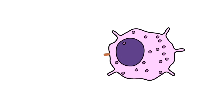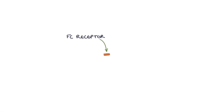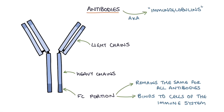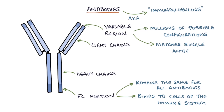The cells of the immune system have an FC receptor that binds to the FC portion of the antibody. The top of the Y contains what's called the variable region, and this has millions of possible configurations. It's this part that's designed to match only a single type of antigen.